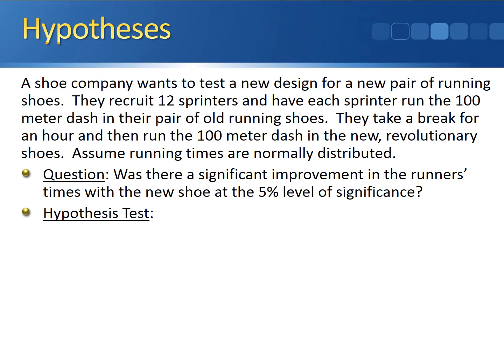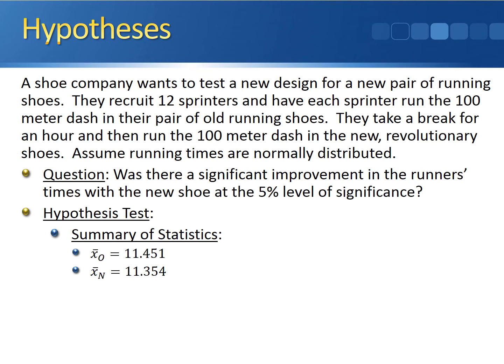Let's formally run through the test now, assuming that running times are normally distributed, because otherwise our sample size is too small to run the test. We know that the average before running time was 11.451 seconds and the average after running time was 11.354 seconds. The sample standard deviation of the differences was 0.117, and the sample size was 12. The hypothesized difference we're using here is 0, and we're doing this test at the 5% level of significance.